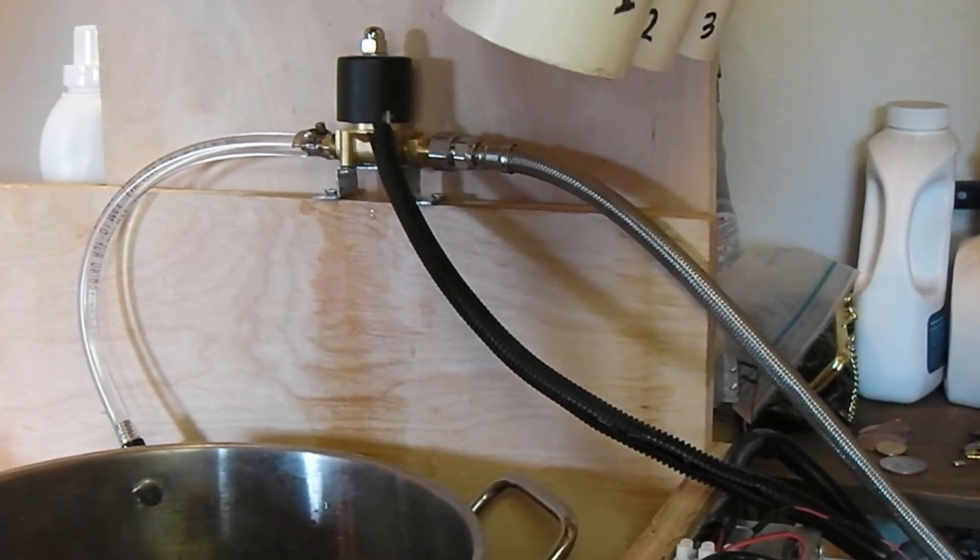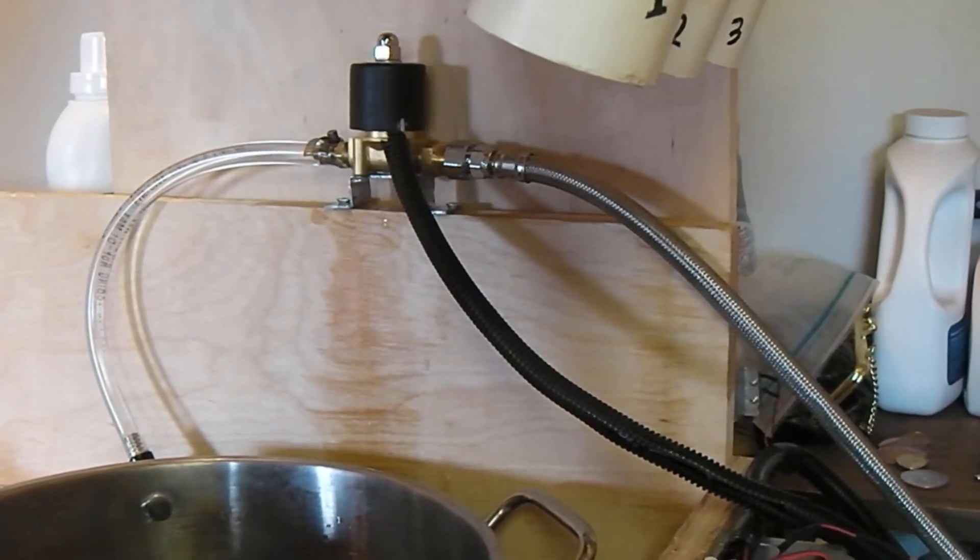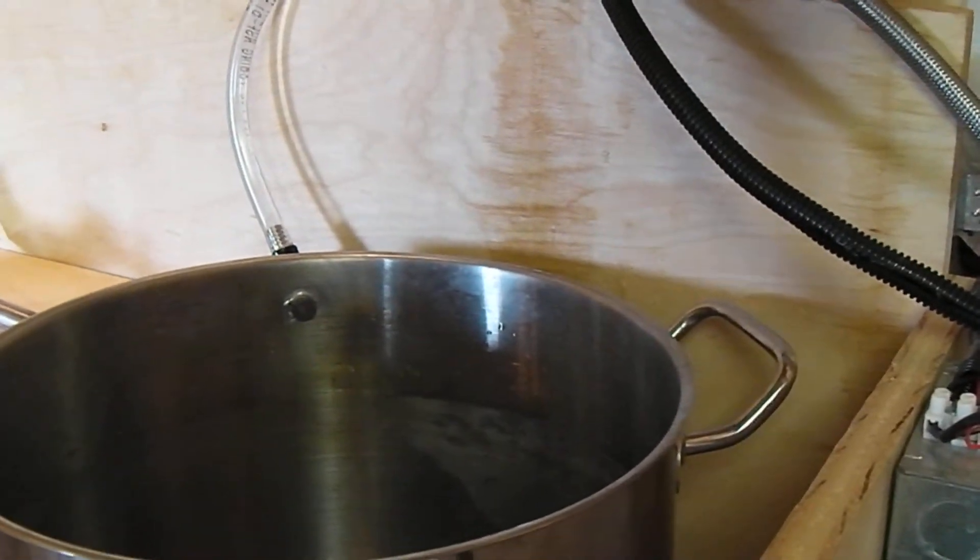I'm just testing out a new modification to the brew bot. Part of the problem was with the old solenoid, basically too much flow and too much splash into the pot.